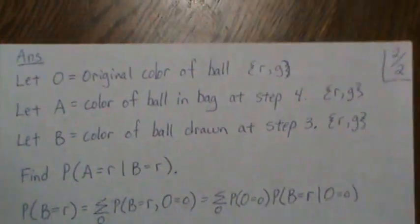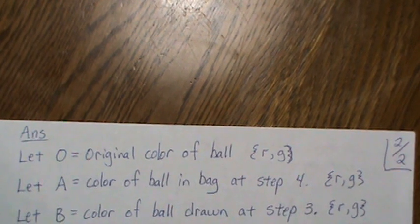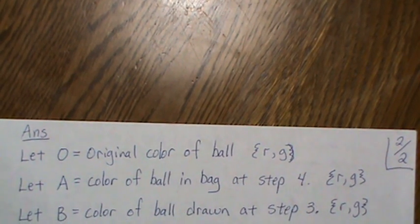Now let's go through the calculations. Let O be the original color of the ball placed in the bag. It could be either red or green.